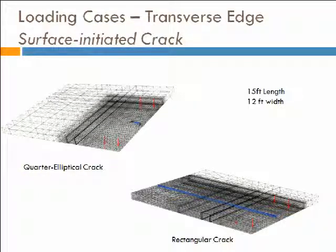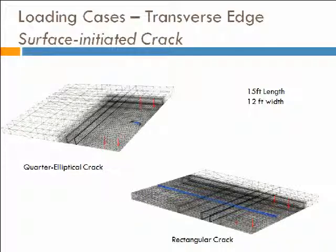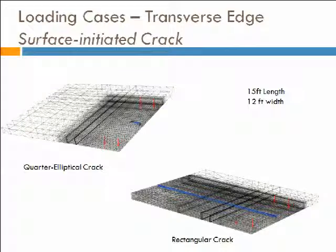We took the results from the 2D analysis and inserted cracks at the critical location. From the 2D analysis with a tandem, the position at the top of the slab was the highest stress case generally for all cases, so we inserted a quarter-elliptical crack there. We also inserted a crack that went all the way through the length of the slab — not full depth, but one-third the depth of the slab. So one is a large shrinkage-type crack roughly 12 inches long and one-third depth, and the other is a very small flaw about a foot long.